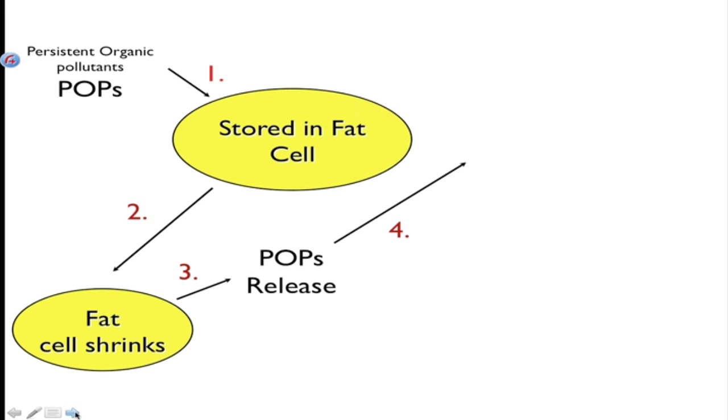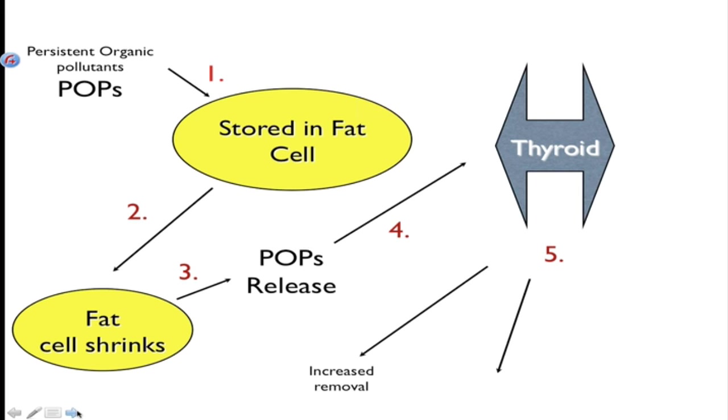These persistent organic pollutants then interact with the thyroid gland. And they have a negative impact on your metabolism because they increase the removal of thyroid hormone from the body. They also decrease the production of thyroid hormone in the thyroid gland. And they also interrupt function of thyroid at the level of the cells.